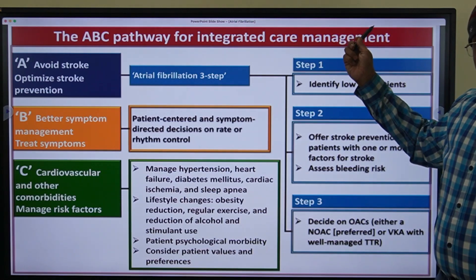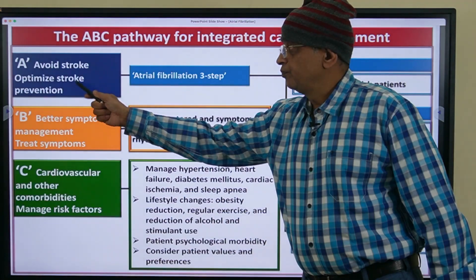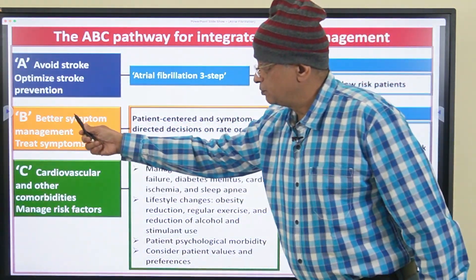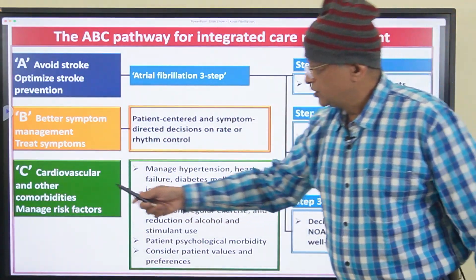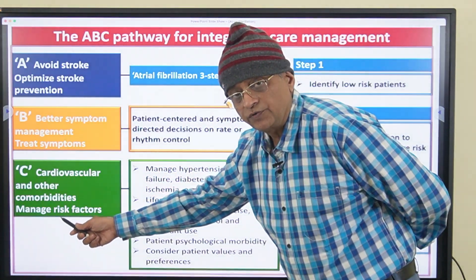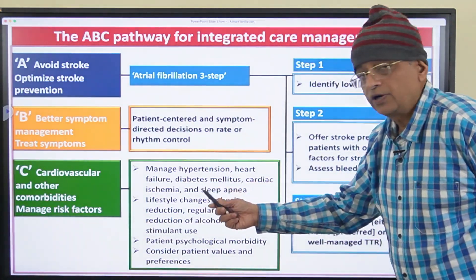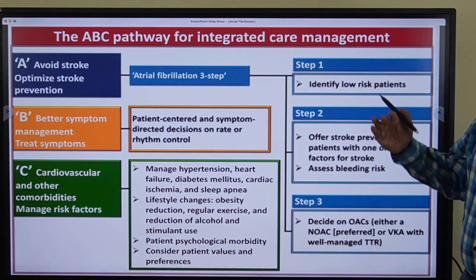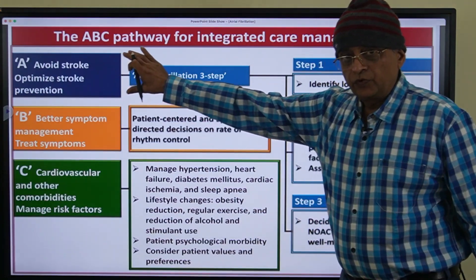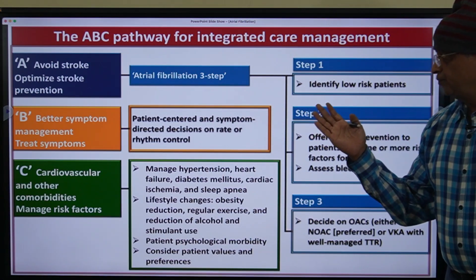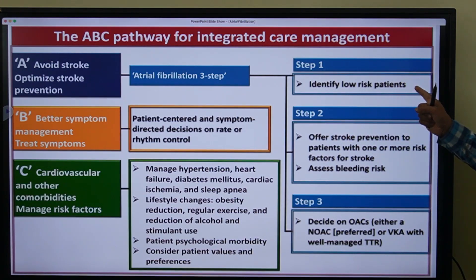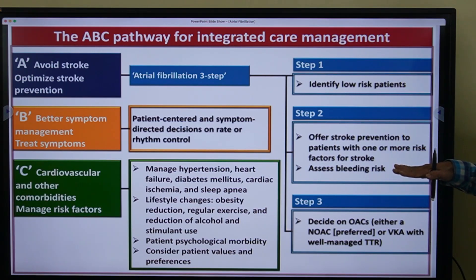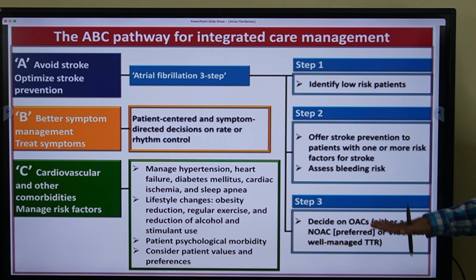This is the ABC pathway for integrated management of AF. 'A' stands for Avoid stroke — optimized stroke prevention. 'B' stands for Better symptom management — rate and rhythm control. 'C' stands for Cardiovascular and other comorbidities — management of hypertension, heart failure, diabetes, and lifestyle changes. For stroke prevention: step one is to identify low-risk patients who do not require oral anticoagulation; step two is to offer oral anticoagulants to all patients with one or more risk factors and assess bleeding risk; step three is to decide on which OAC to start.